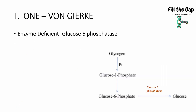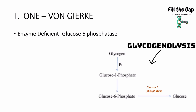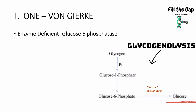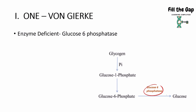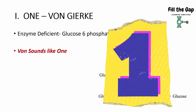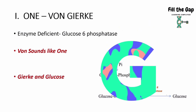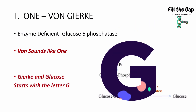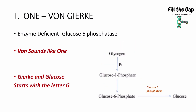The first one is Von Gierke's disease. The enzyme which is deficient is glucose-6-phosphatase. In glycogenolysis, glucose-6-phosphate must be converted to glucose with the help of this enzyme, so if it's deficient, we cannot break down glycogen. To remember: 'von' sounds like 'one,' helping you remember it's the first disease. Also, Gierke and glucose both start with G, helping you remember the deficient enzyme is glucose-6-phosphatase.